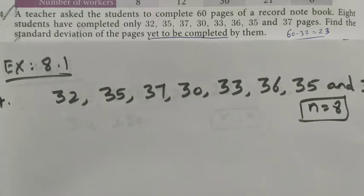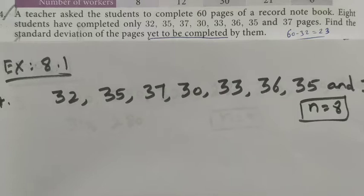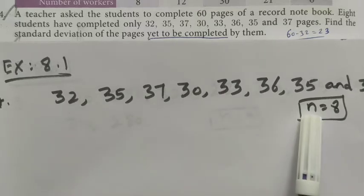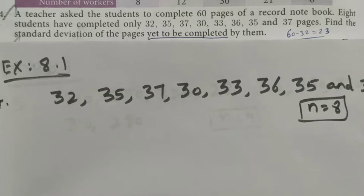Hi students, Class 10, Exercise 8.1, Question 4. A teacher asked the students to complete 60 pages of a record notebook. The students have completed only 32, 35, 37, 30, 33, 36, 35, and 37 pages. The number of students is 8, so n = 8. We need to find the standard deviation of the pages yet to be completed by them.